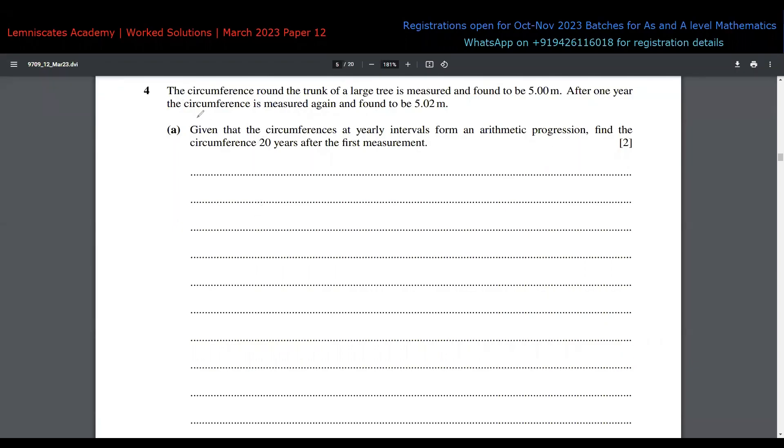Now in this fourth question about sequences and series, it's given that the circumference around the trunk of a large tree is measured and found to be 5 meters. After one year, the circumference is measured again and found to be 5.02 meters. Given that the circumference at yearly intervals forms an arithmetic progression, find the circumference 20 years after the first measurement.